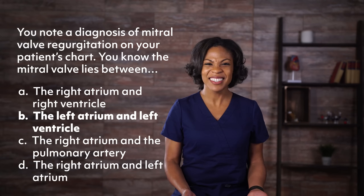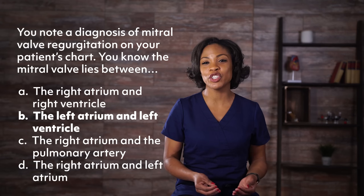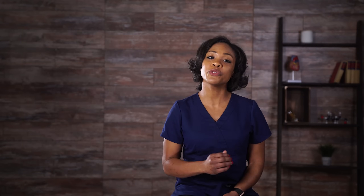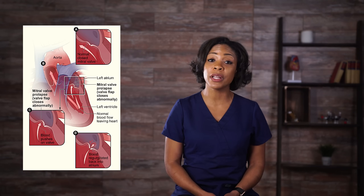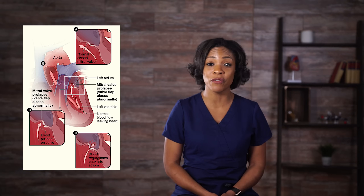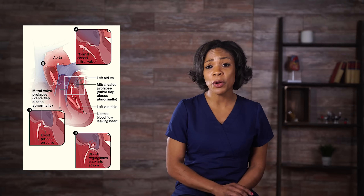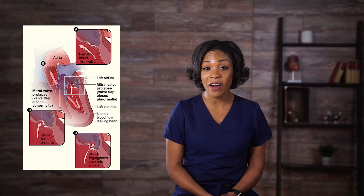If you said b, you're correct — the left atrium and left ventricle. Mitral valve regurgitation allows blood to flow backwards across the valve, flowing from the left ventricle back into the left atrium of the heart.